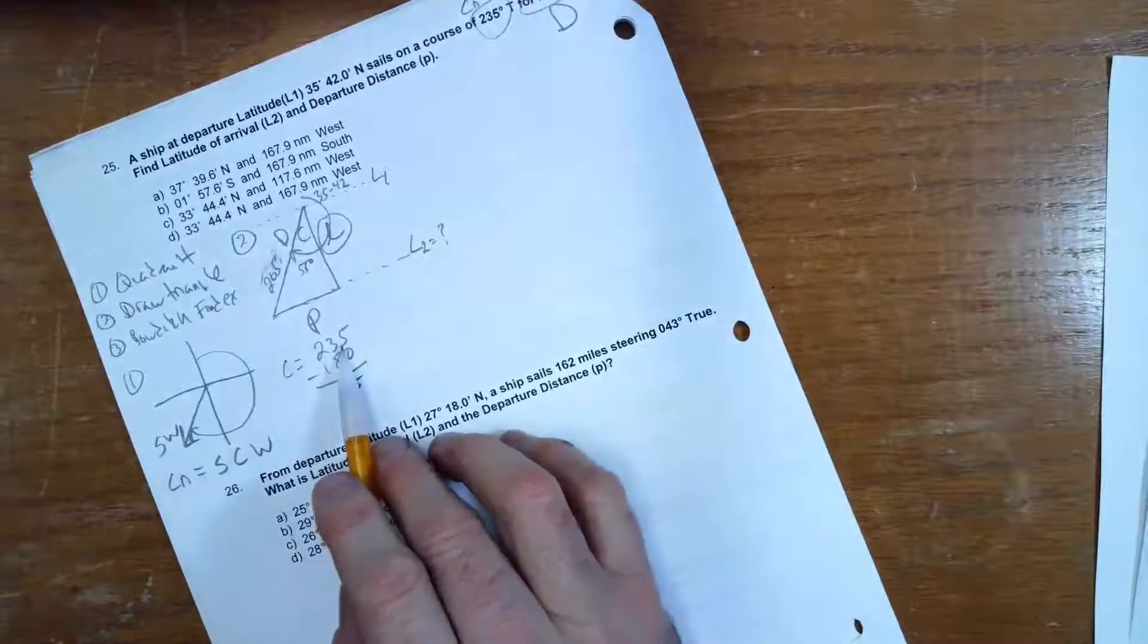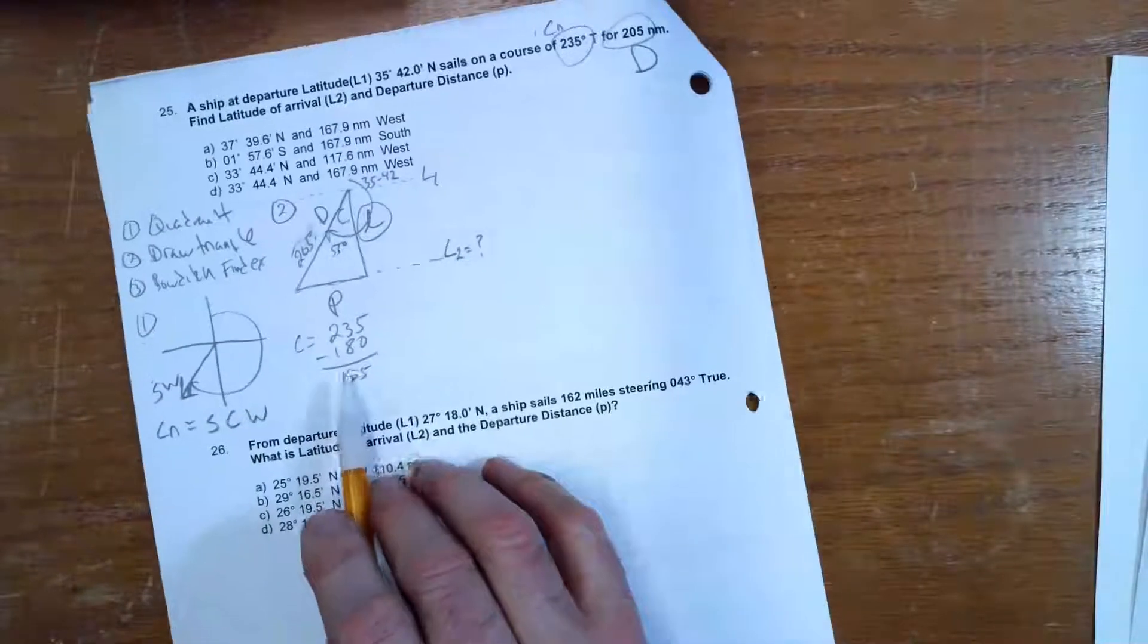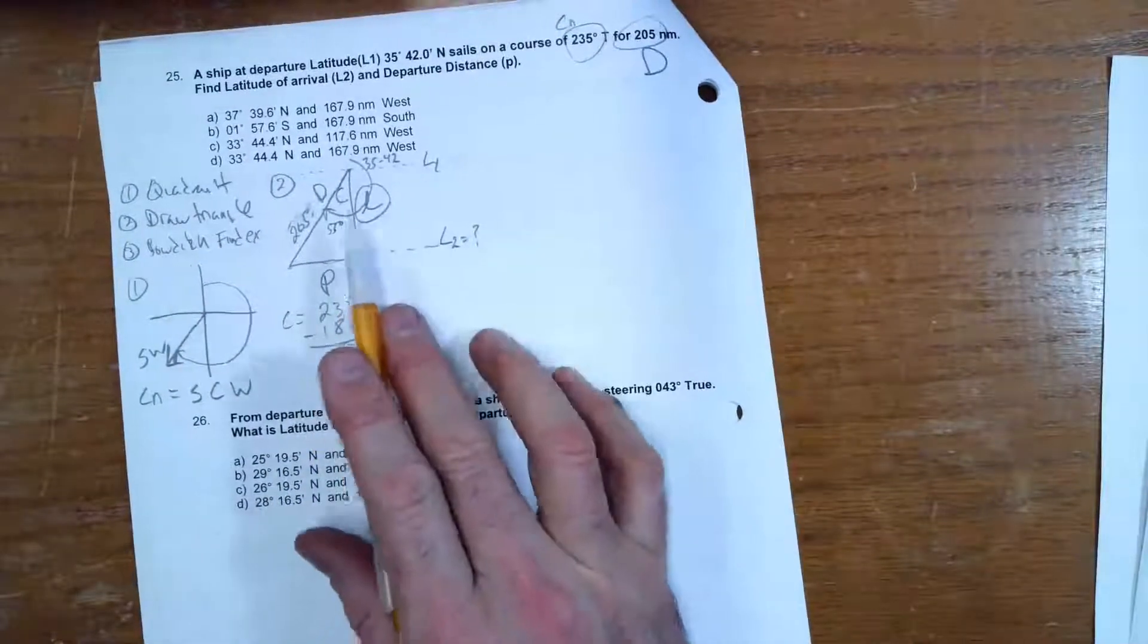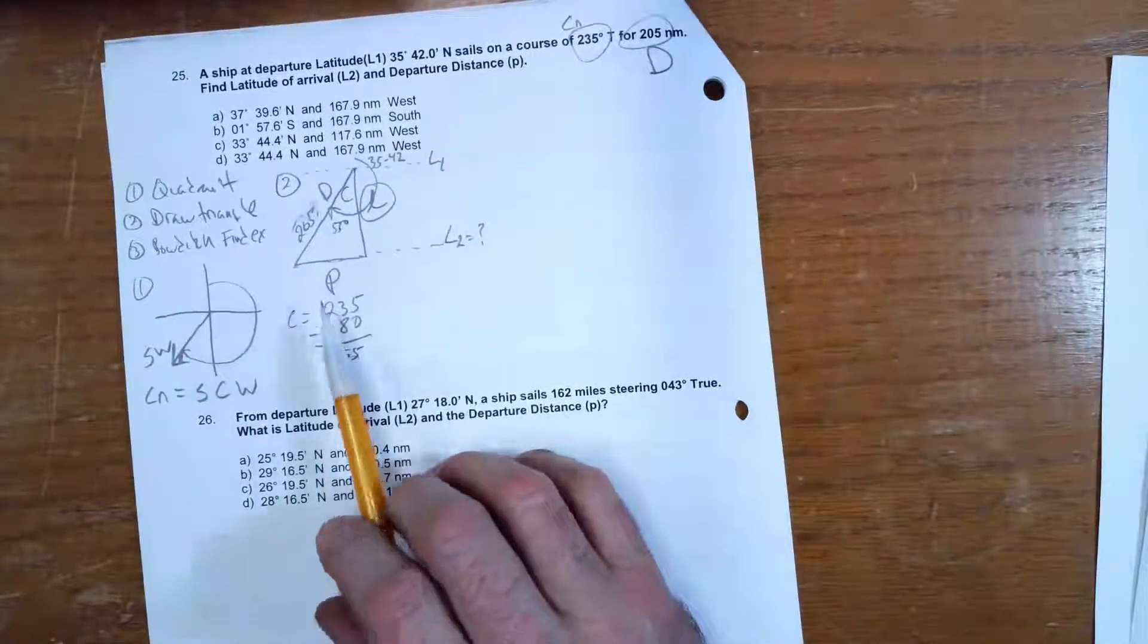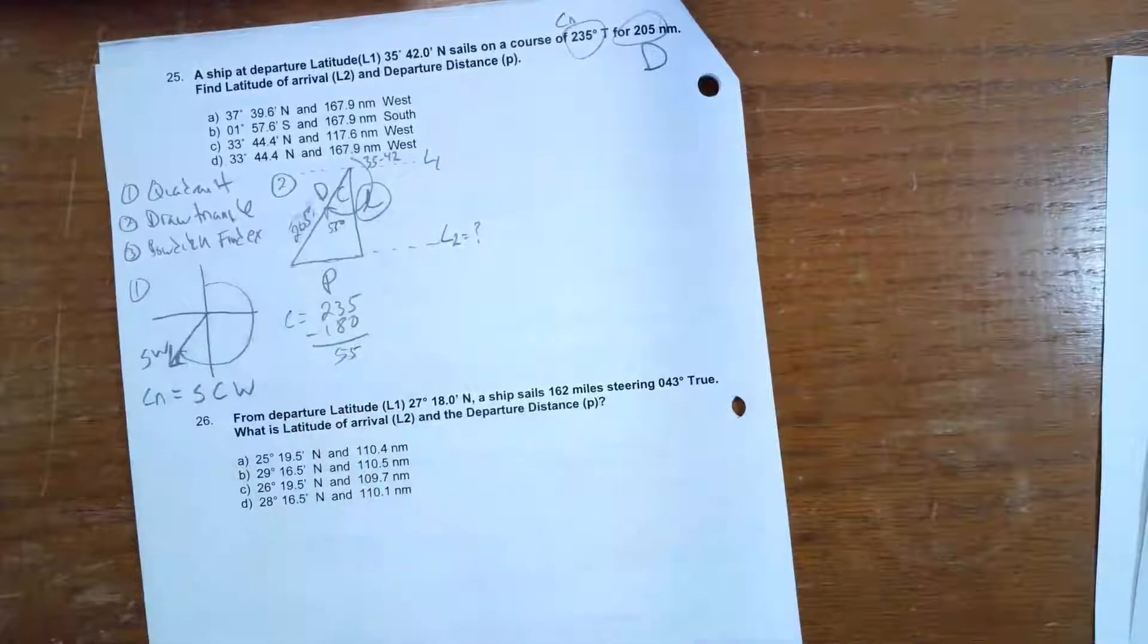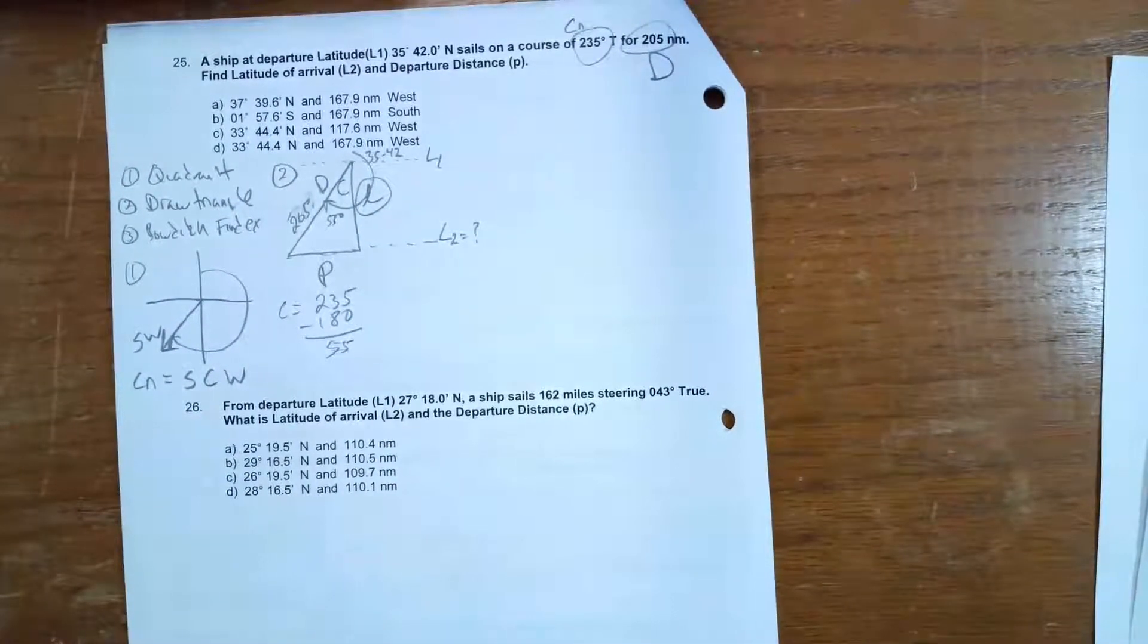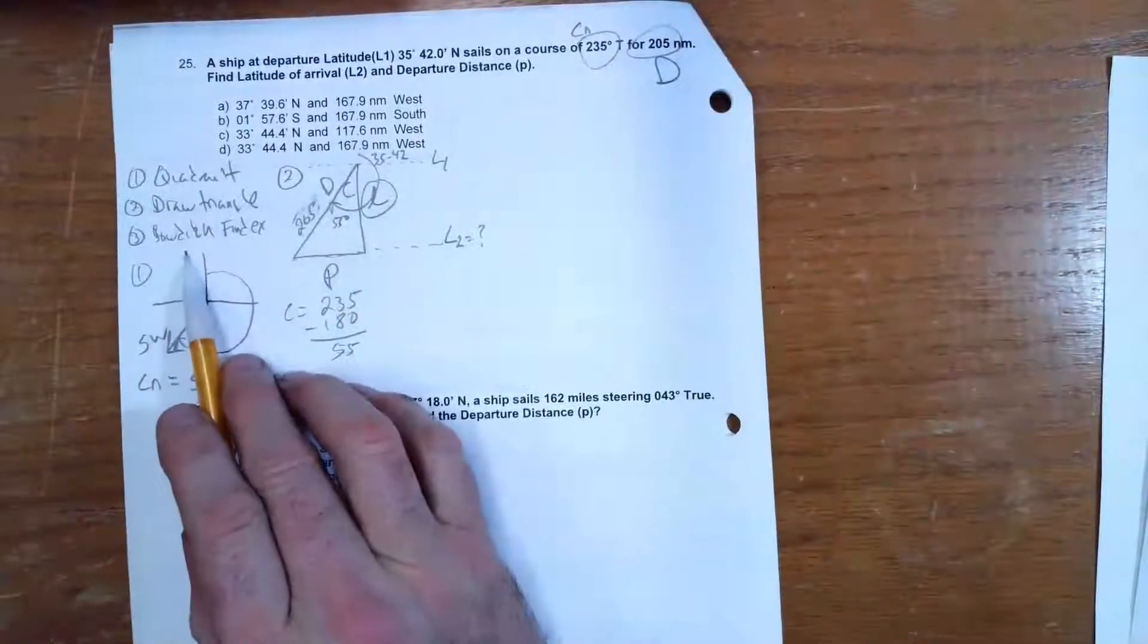Now, if you use 235° instead of 55° in this situation for a rhumb line sailing, you'd be okay. But later on, if you end up with a negative distance, you just strip the negative off. But if you use 235° in great circle, you're running a very great risk of coming up with the wrong answer. That's all I'm going to say about that for now. I'll talk more about that in class.